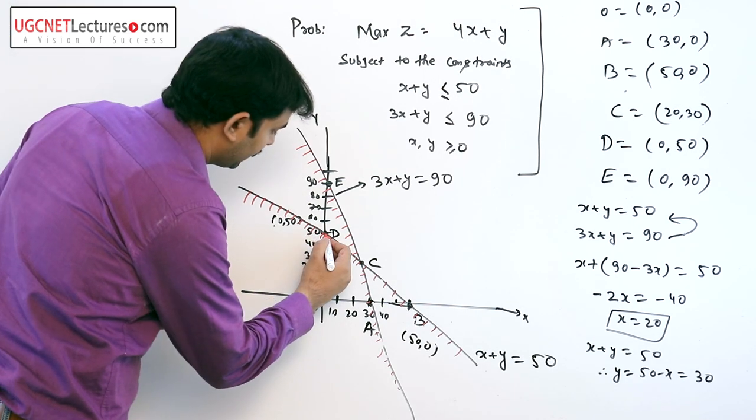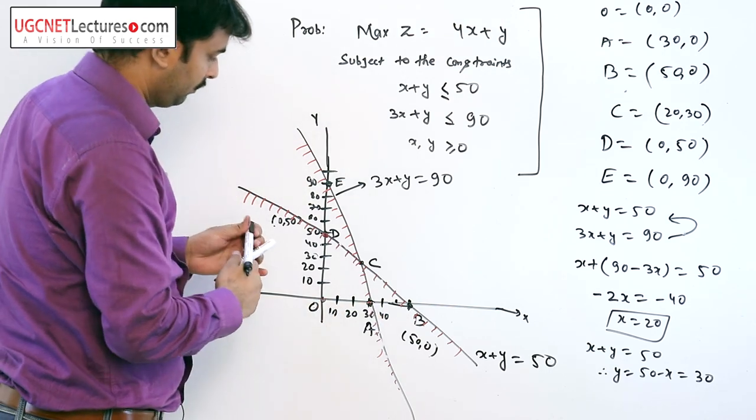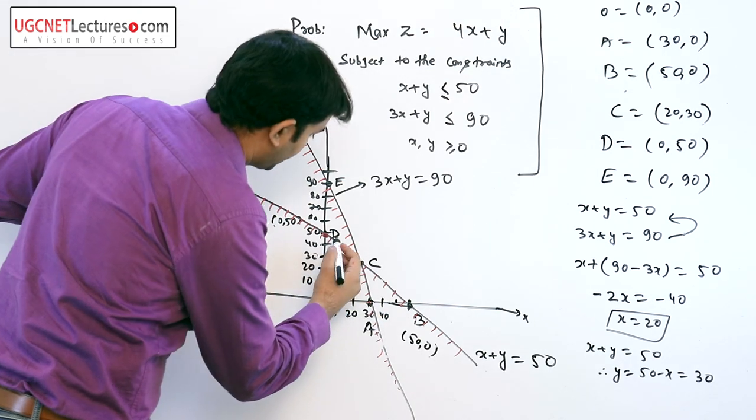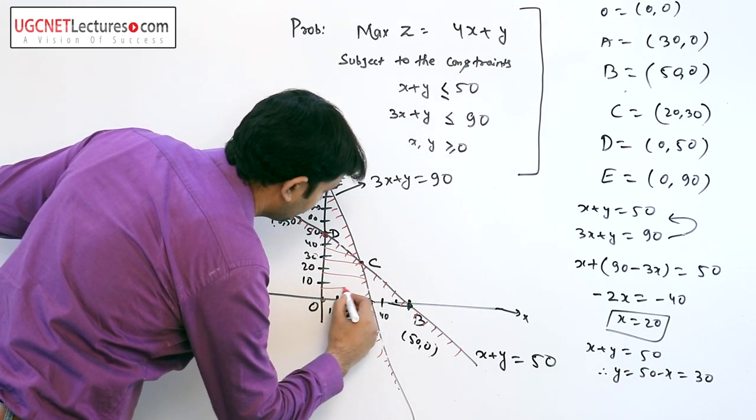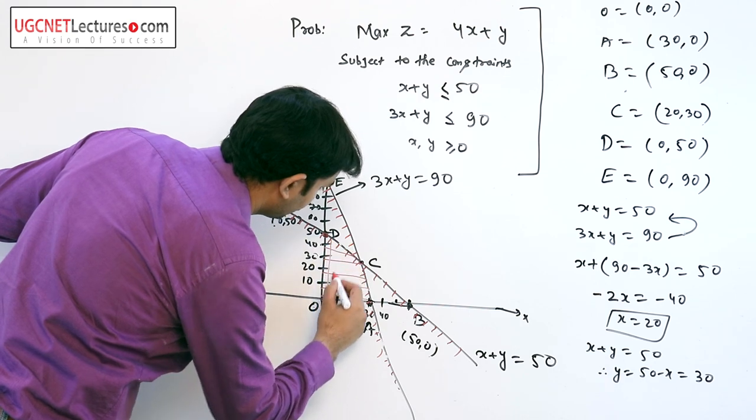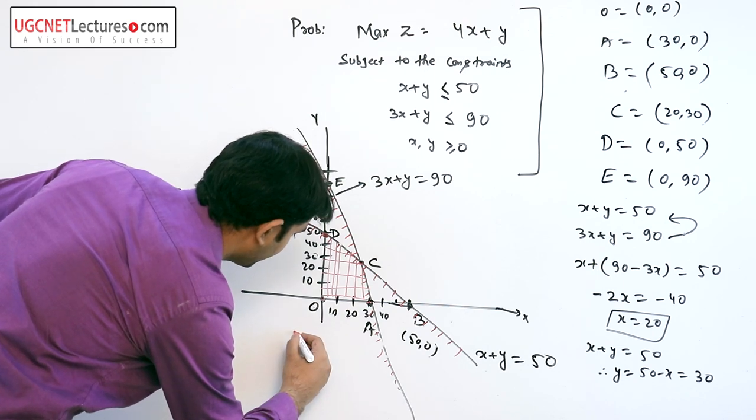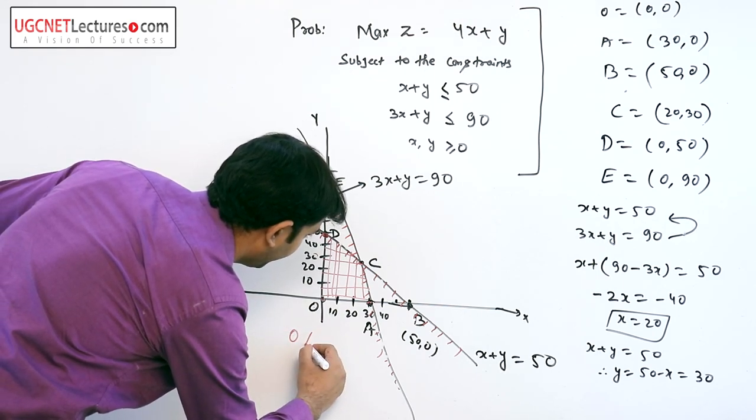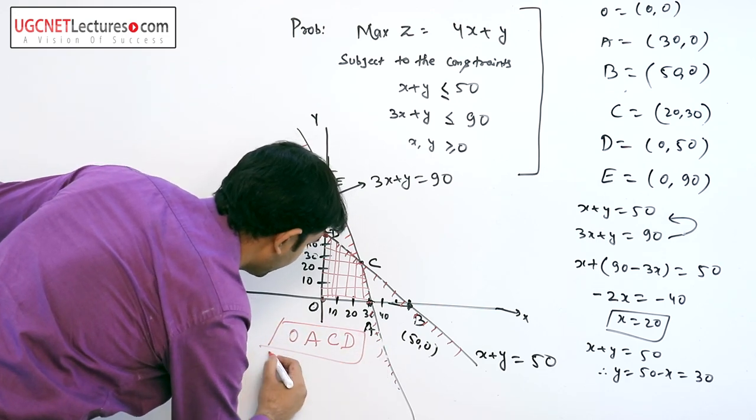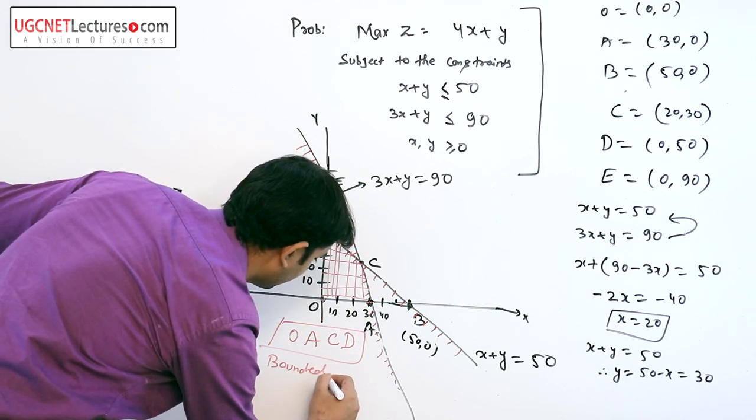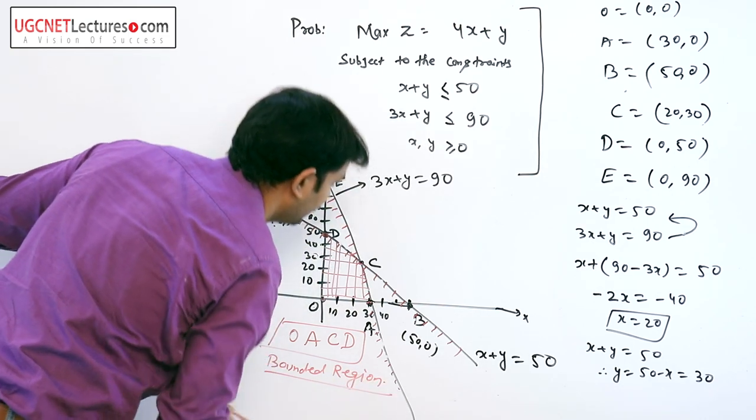The region which satisfies both constraints has the boundary region OACD. So the boundary region is OACD.